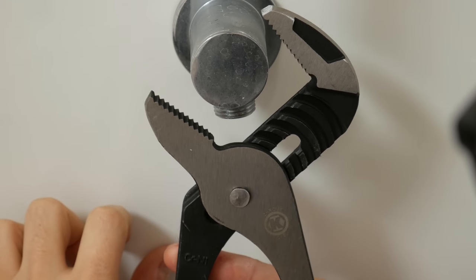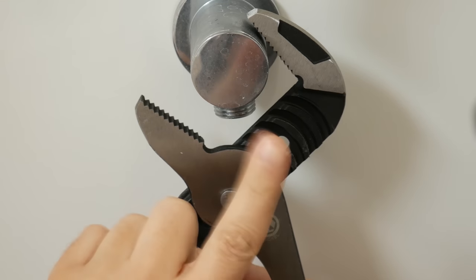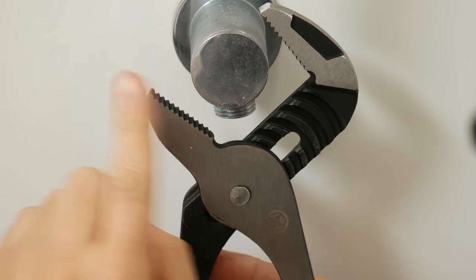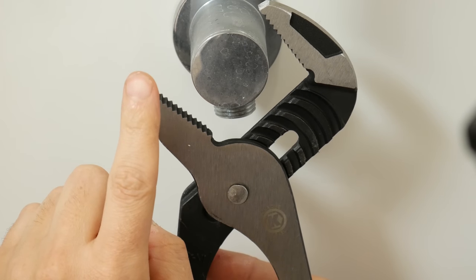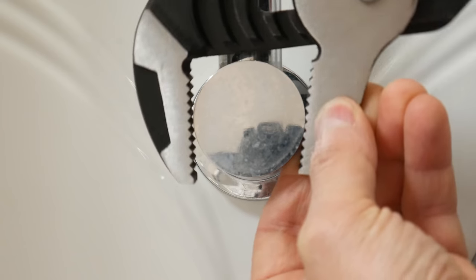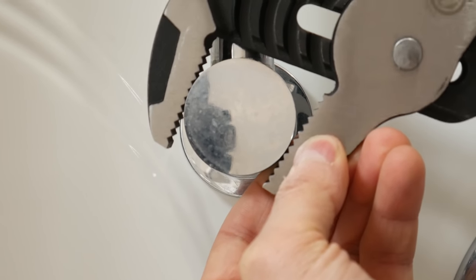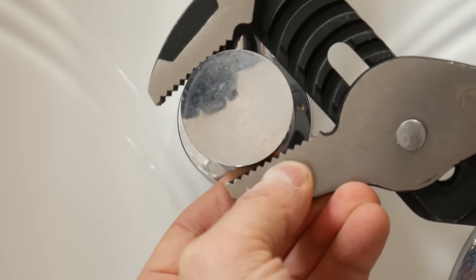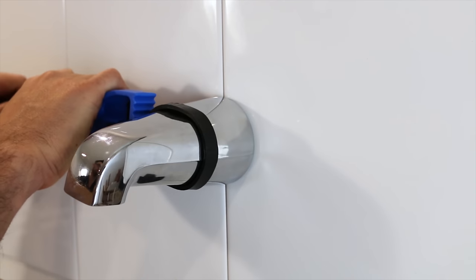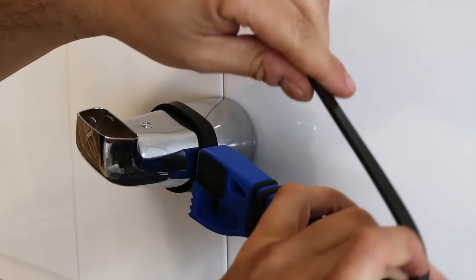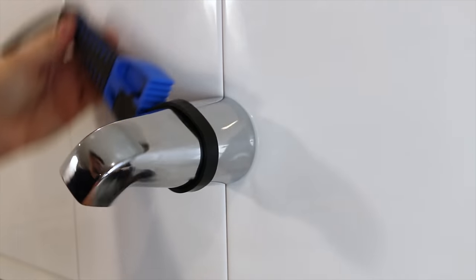Number six is using adjustable pliers on a chrome finish. This has to be one of my biggest pet peeves when I'm plumbing. The sound of tempered teeth grinding through a soft, mirrored finish fixture. As much as it may be an obvious thing not to do, we get to see it more often than we should.